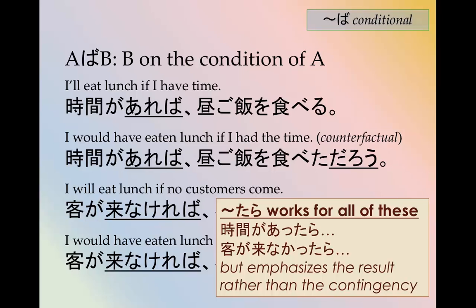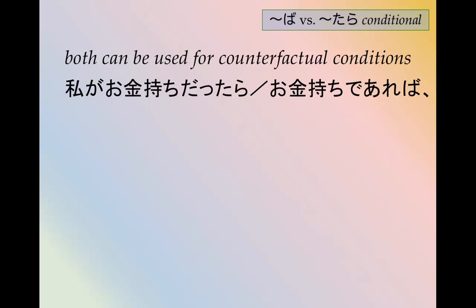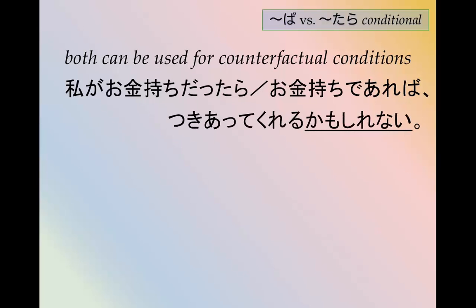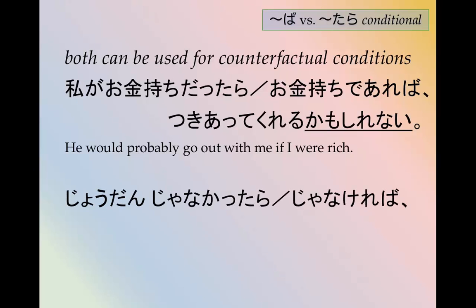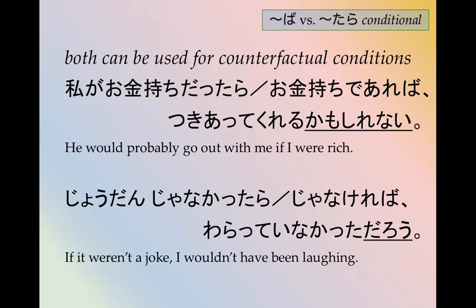Both forms can be used for counterfactual cases. Like: 私がお金持ちだったら / 私がお金持ちであれば、付き合ってくれるかもしれない — he would probably go out with me if I were rich. Also in the negative: 冗談じゃなかったら / 冗談じゃなければ、笑っていなかったら — if it weren't a joke, I wouldn't have been laughing.